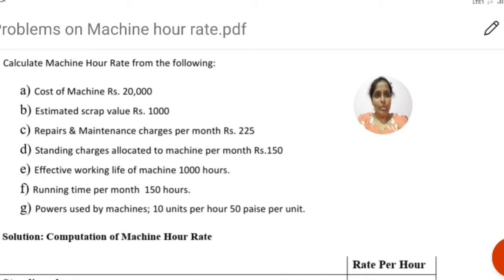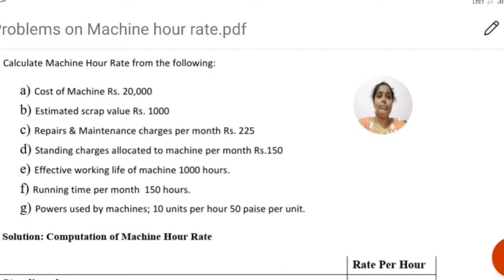Let us look at problems on machine hour rate. Calculate the machine hour rate from the following information. The cost of machine is rupees 20,000. Estimated scrap value is rupees 1,000. Repairs and maintenance charges per month is rupees 225. Standing charges allocated to machine per month is rupees 150 — these are the fixed charges.